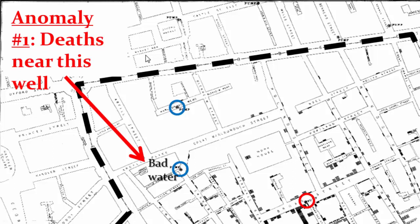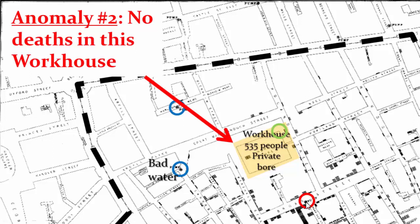He noticed five major anomalies that required explanation. The first anomaly was that people died near a different well. When he interviewed local residents, he discovered they didn't like that water — it had a really bad taste. So people were actually traveling all the way to Broad Street to get water from the Broad Street pump, because it was known locally as having very pleasant tasting water.